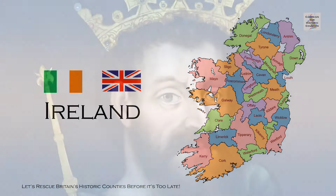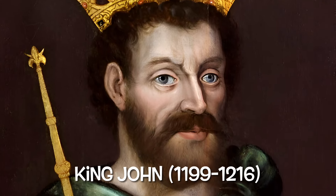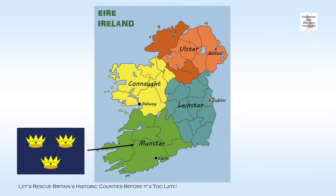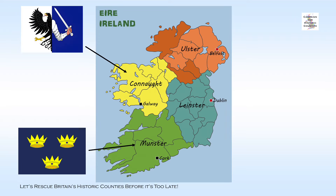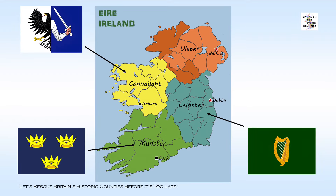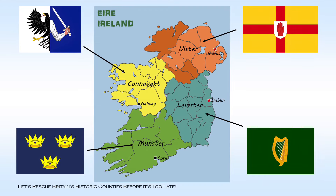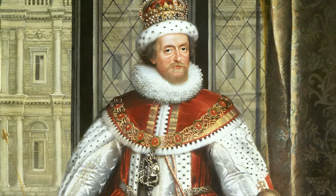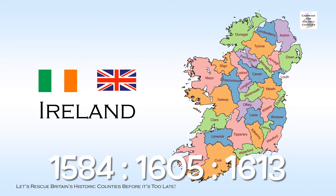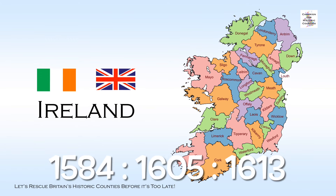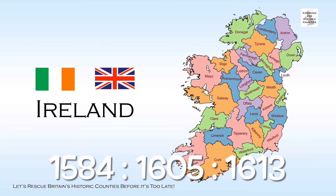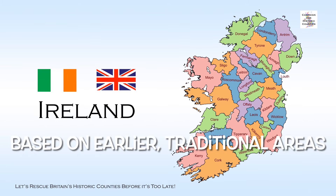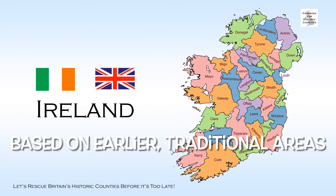The division of Ireland into counties began during the reign of King John (1199 to 1216). This process continued for several hundred years, as more of Ireland came under the control of the English crown. Munster was divided into counties in 1571 and Connacht in 1579. Finally, Ulster was shired during the reign of James I. The complete set of counties, as they are today, were laid down in 1584, with their modern boundaries not finally settled until 1605, or 1613 in the case of Londonderry, albeit that most of it had existed as county Coleraine from Anglo-Norman times. As in Wales, the counties were generally based on earlier, traditional areas.